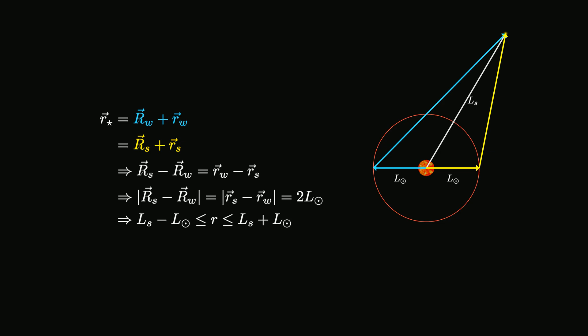Using triangle inequality for the Earth, Sun and the star, we can obtain a minimum and maximum value for the general distance r from Earth to the star. The equalities hold when the star, the Sun and the Earth are aligned.